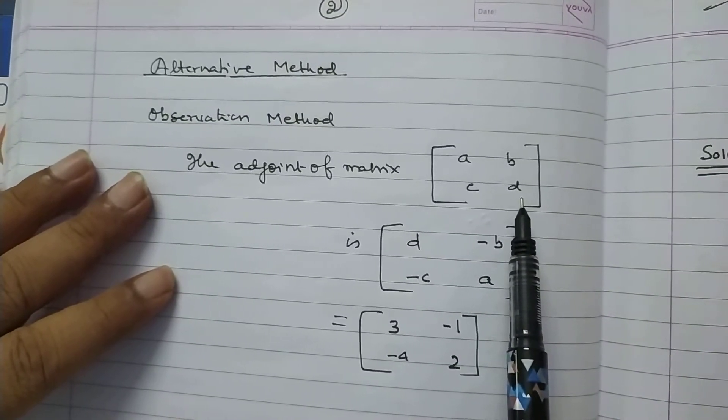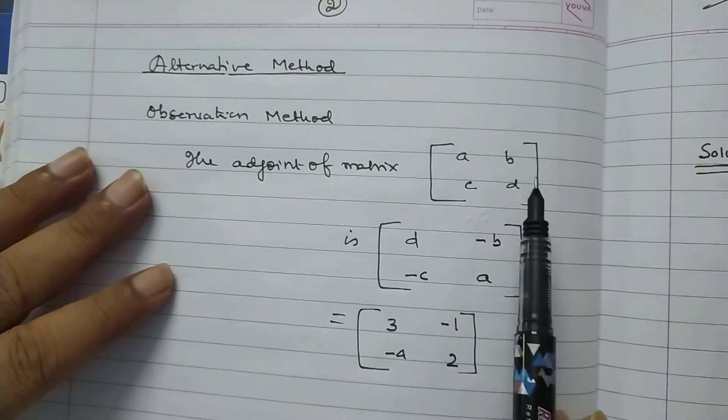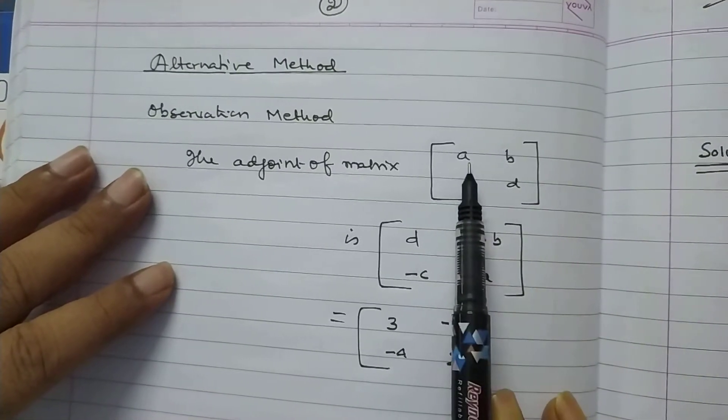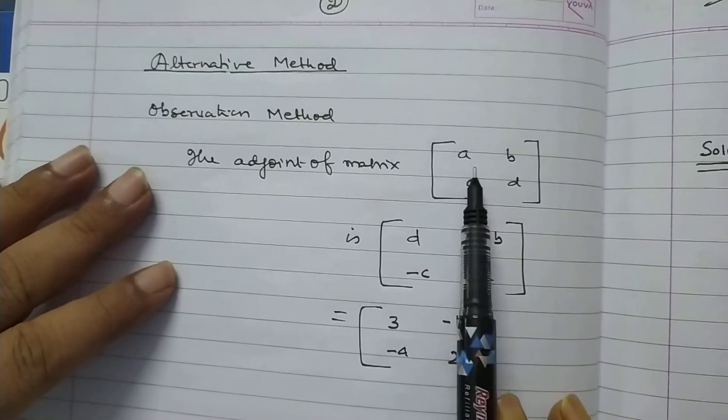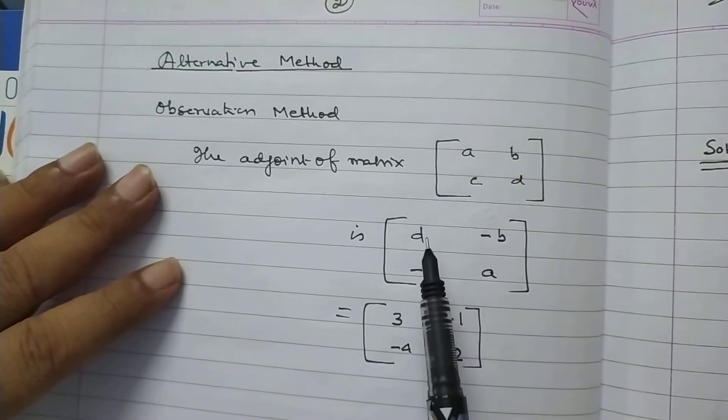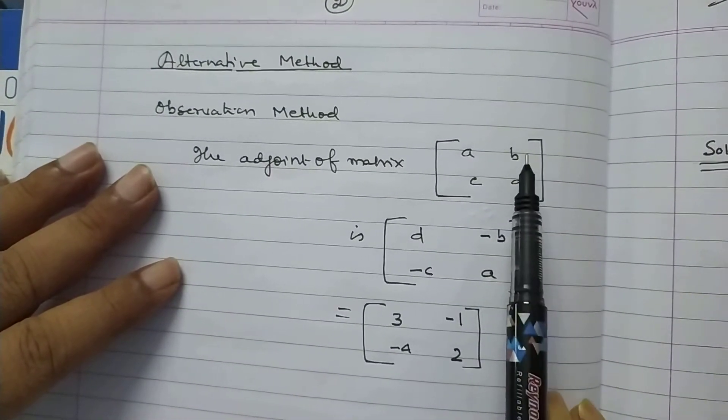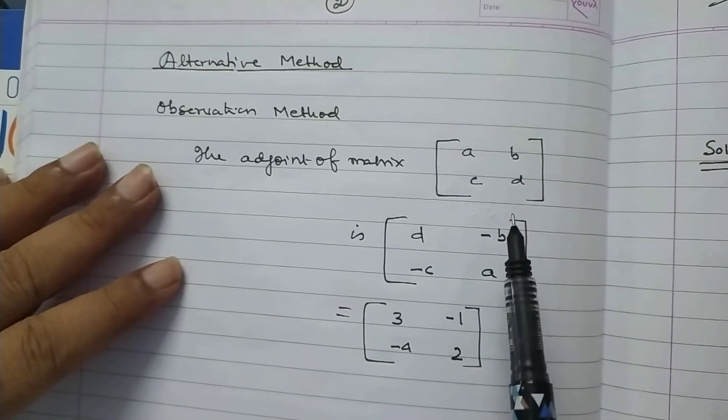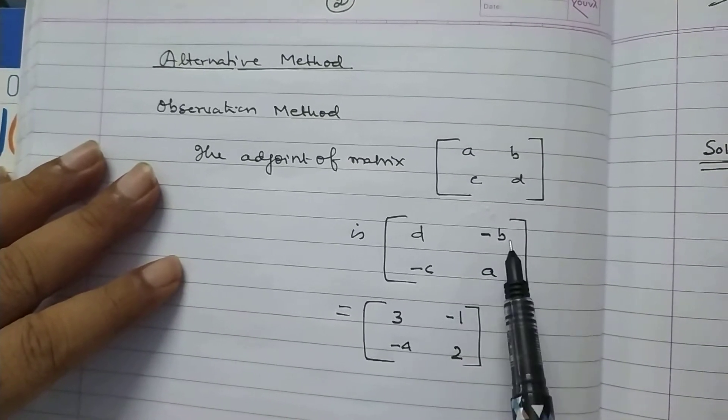The technique is, you reverse the diagonal element. Diagonal elements are here, A and D. After reversing, it will be D, A. And change the sign of non-diagonal element. So, minus C, minus B.